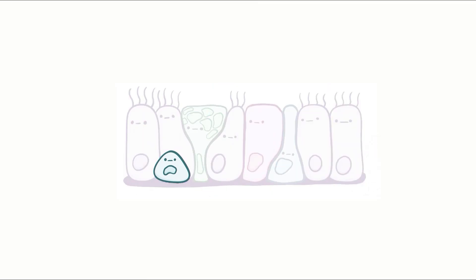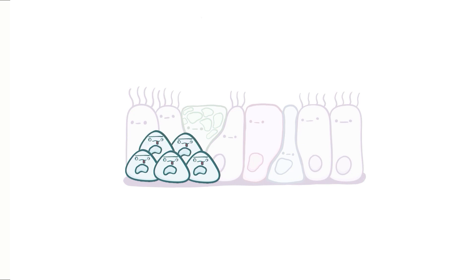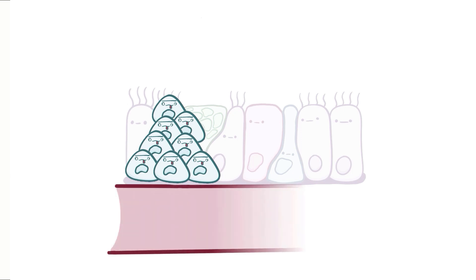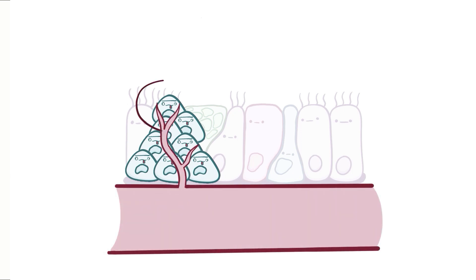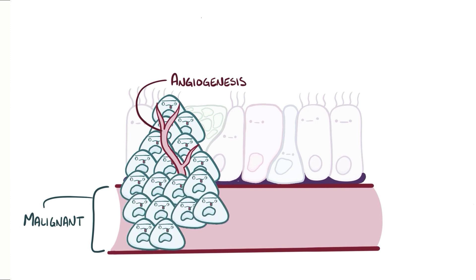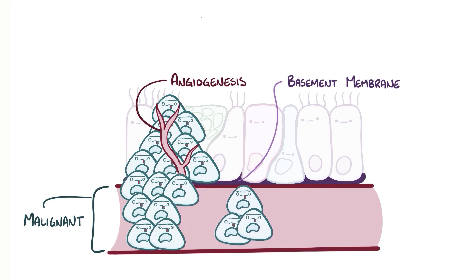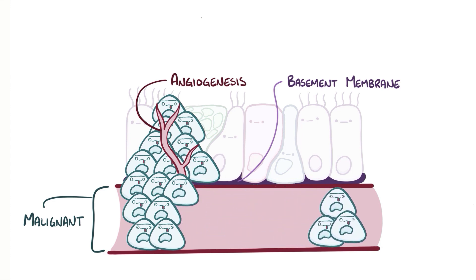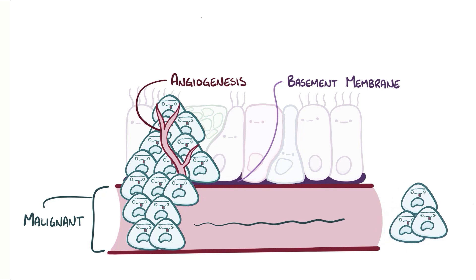Cells can become mutated because of environmental or genetic factors. A mutated cell becomes cancerous when it starts to divide uncontrollably. As cancer cells pile up, they become a small tumor mass, and they need to induce blood vessel growth — called angiogenesis — to supply themselves with energy. Malignant tumors are ones that can break through the basement membrane. Some go a step further, detaching from the primary tumor site, entering nearby blood vessels, and establishing secondary sites of tumor growth throughout the body — a process called metastasis.